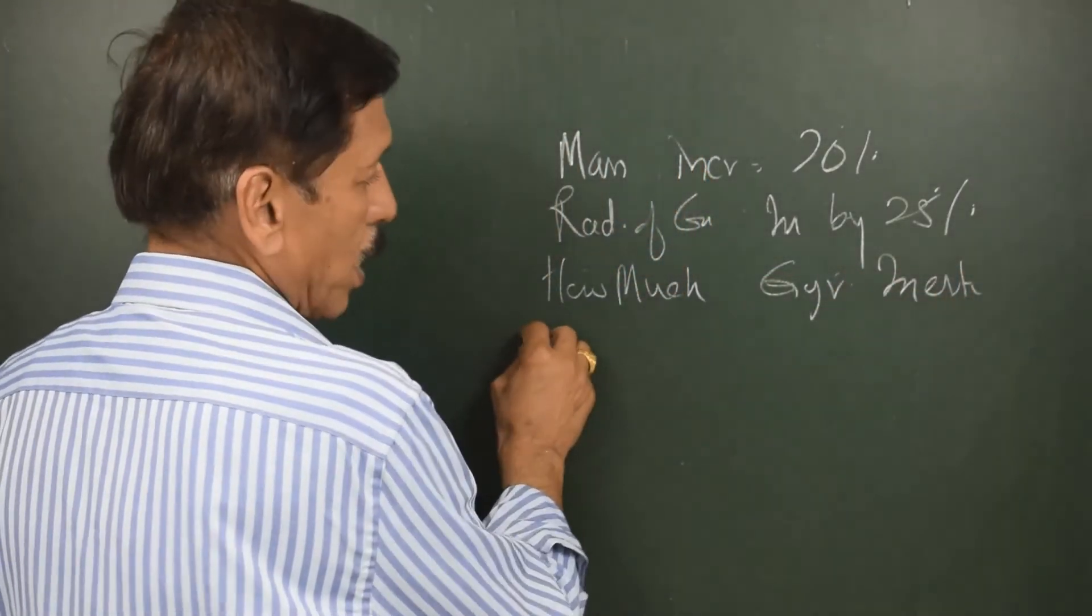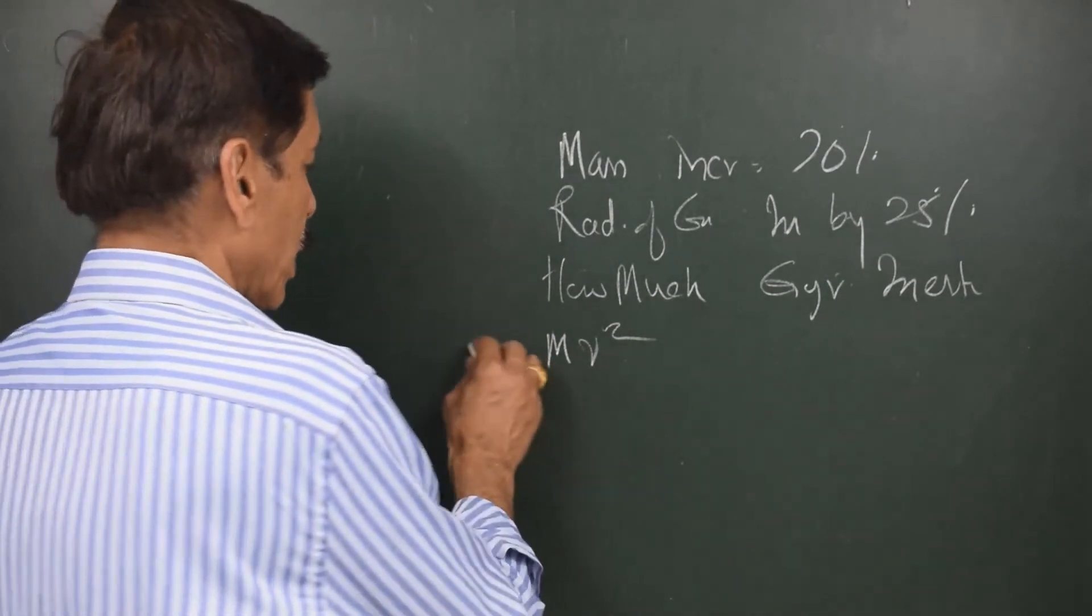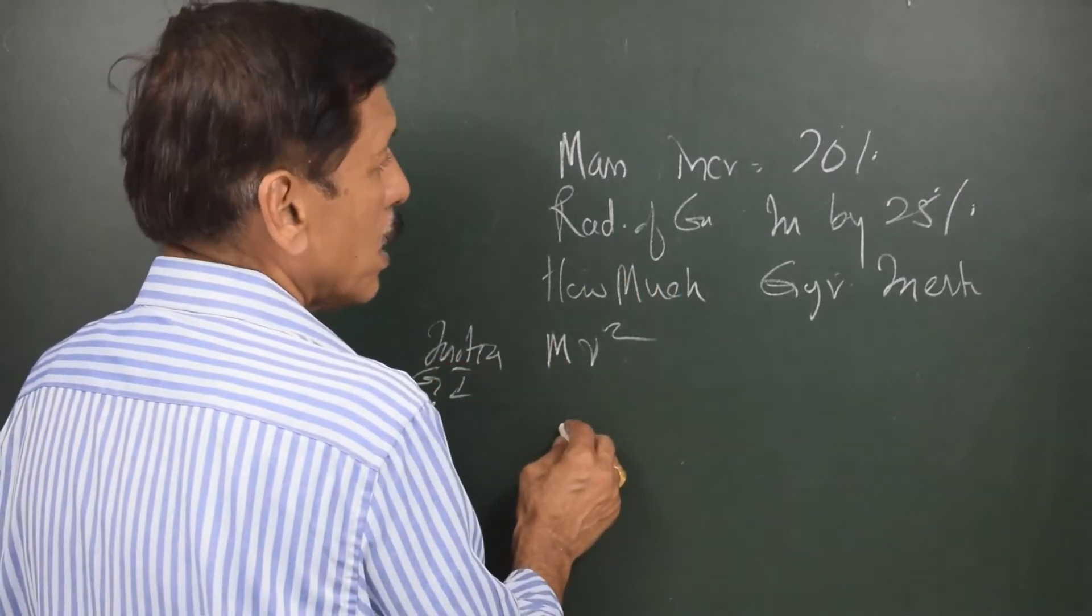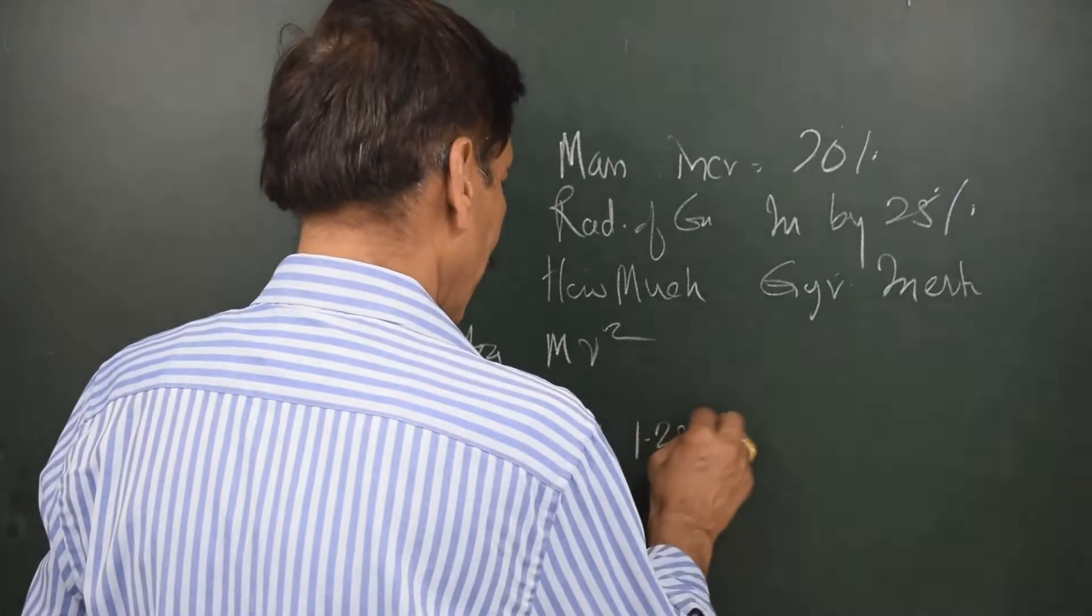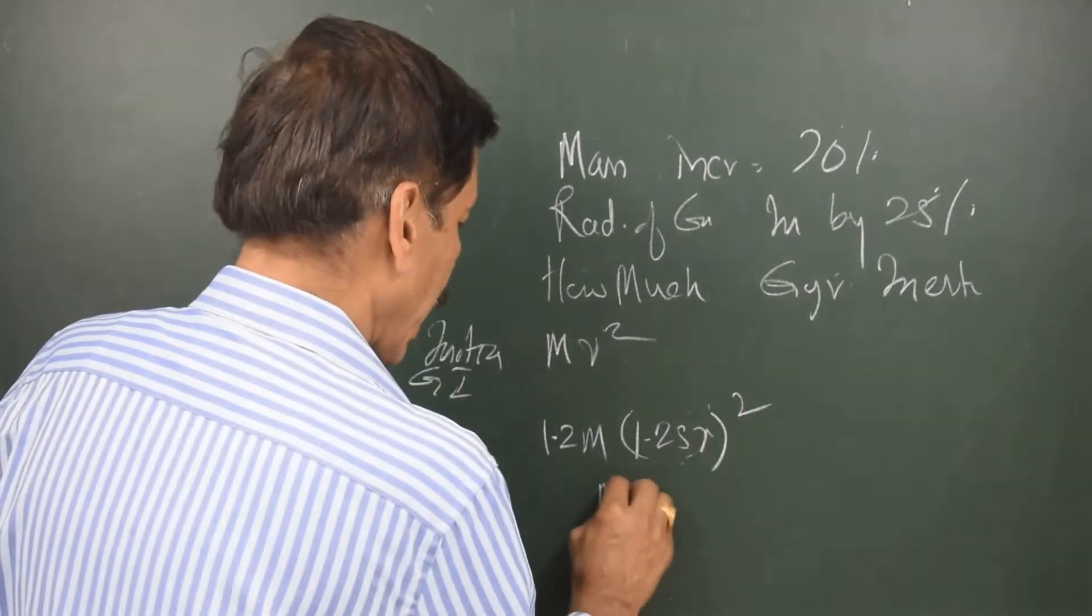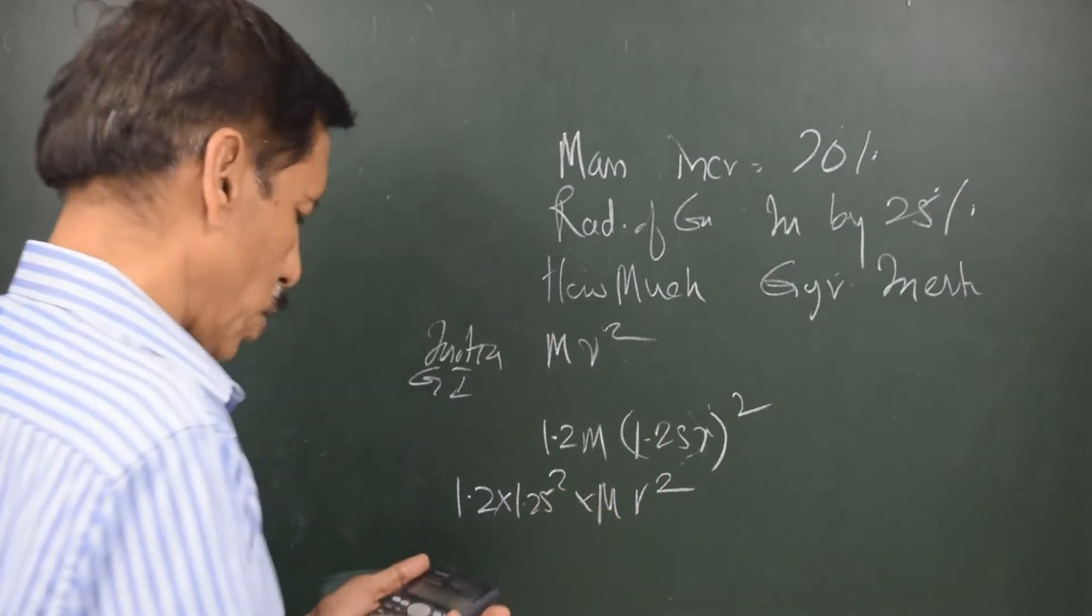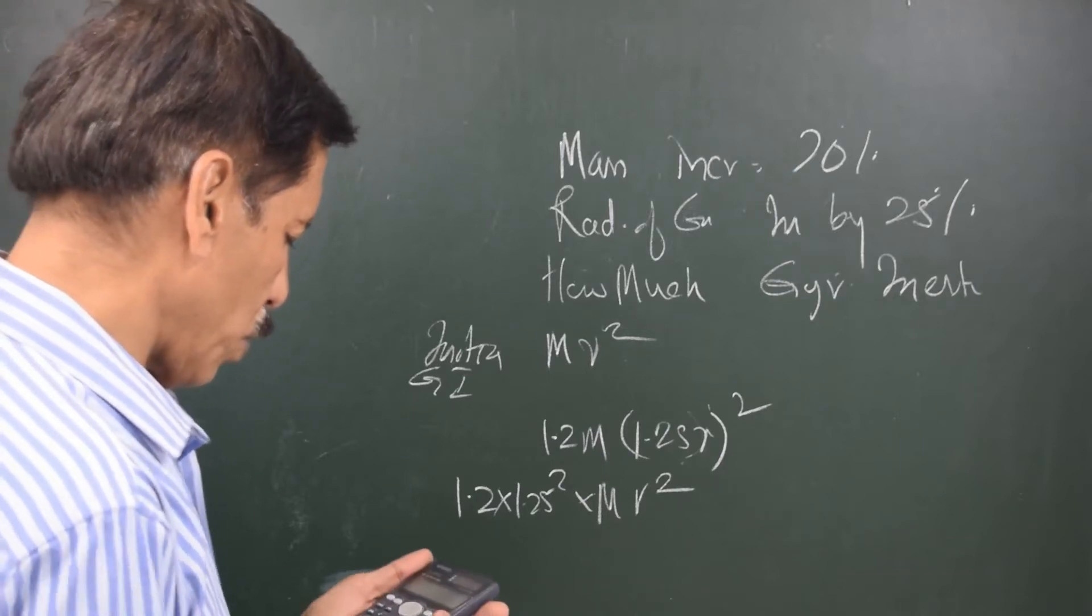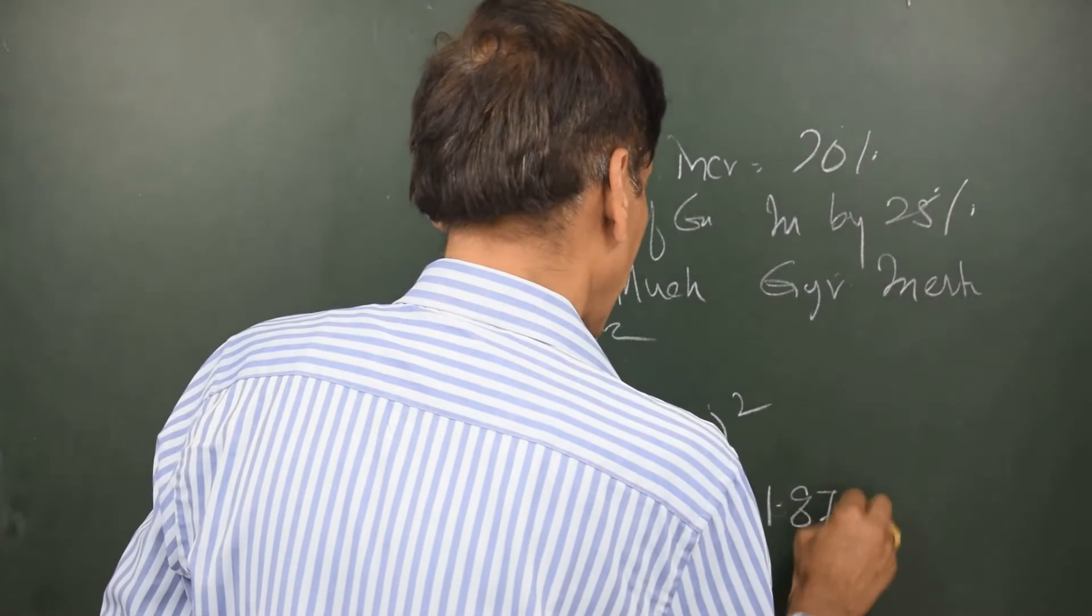As you know, moment of inertia is equal to m R square, mass into radius square. Now this is the initial gyroscopic inertia, m R square. Now m is increased by 20% so it becomes 1.2m. Radius of gyration is increased by 25% so it becomes 1.25 R whole square. So this becomes m R square into 1.2 into 1.25 square. Let's look at the product 1.2 into 1.25 equal to 1.875. So the gyroscopic inertia has increased by 87.5%.